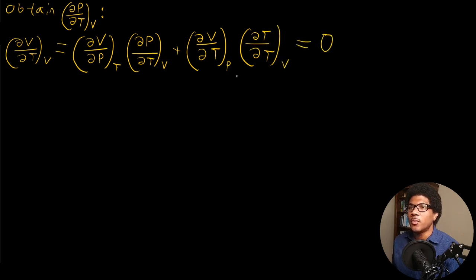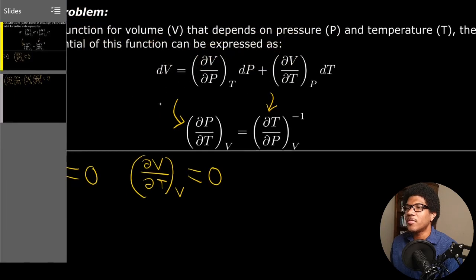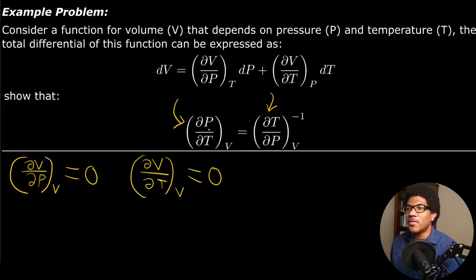We know this whole expression is going to equal zero. Now this DT/DT term is just going to be one. So now we're left with these two partial derivatives set equal to zero. What we can do here is try to isolate DP/DT. Keep in mind what our original goal is — we're trying to isolate this term so that we can show that it's equal to the inverse of the other partial derivative.